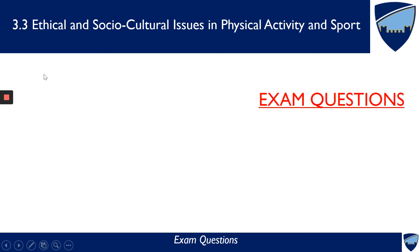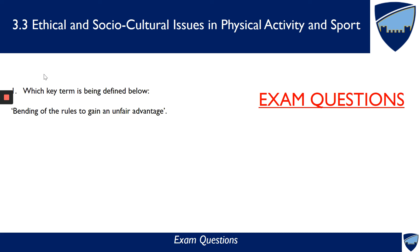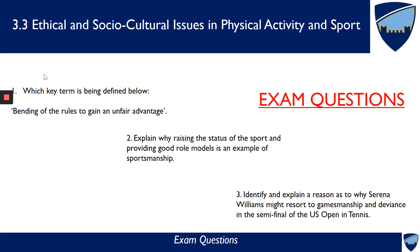Finally, some exam questions for practice. Number one: which key term is defined as 'bending of the rules to gain an unfair advantage'? Number two: explain why raising the status of the sport and providing good role models is an example of sportsmanship. Number three: identify and explain a reason as to why Serena Williams might resort to gamesmanship and deviance in the semi-final of the US Open in tennis. Pause the video and write your answers on paper as you would in an exam.